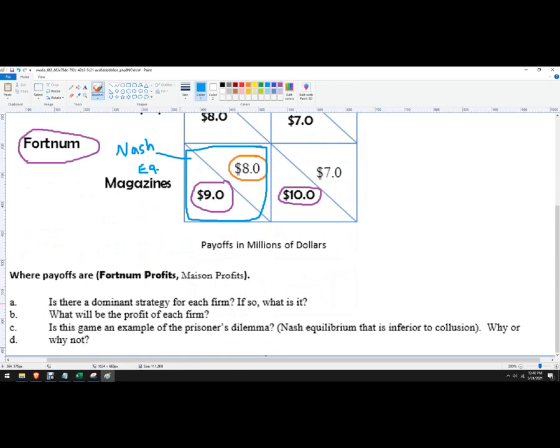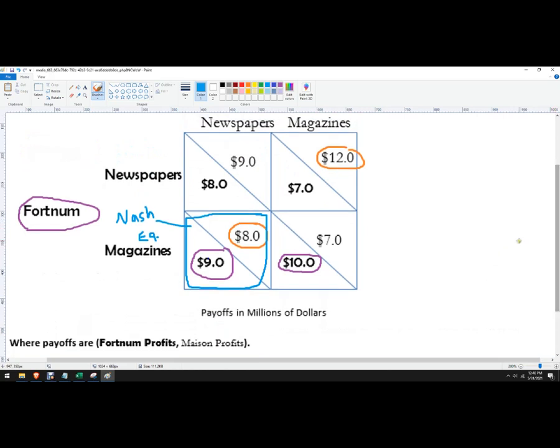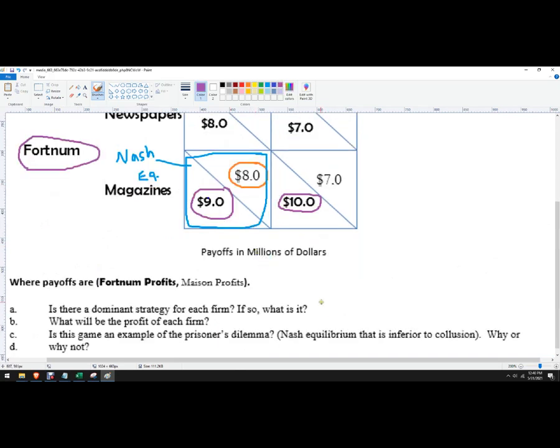Let's see what the question is. Is there a dominant strategy for each firm? Dominant strategy means you're going to choose that option regardless of what the other player does. That only exists for Fortnum. Fortnum's dominant strategy is to go magazines. They should advertise in magazines because regardless of what Mason does, they're better off advertising in magazines.